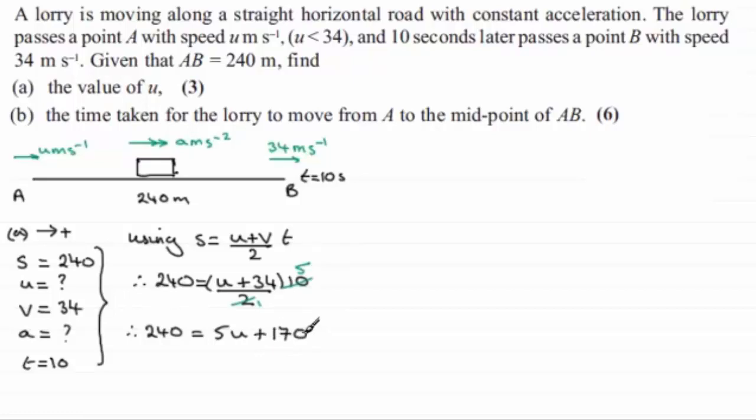And so if I take away 170 from both sides, that's going to leave me with 5U equals 240 take away 170, which is 70. Divide both sides now by 5, and U equals 70 divided by 5, which is 14. Okay, so there's the value of U.